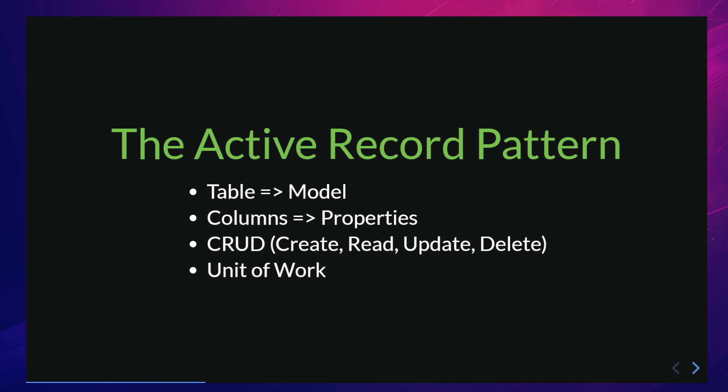An ORM typically implements the so-called active record pattern. The active record pattern is a way of representing database tables and objects in an object-oriented programming language. Each object or model corresponds to a row in the table and the properties of the object represent the columns of the table. The ORM provides a set of methods to perform CRUD — create, read, update, delete — operations on the data, which are mapped to the corresponding SQL statements.